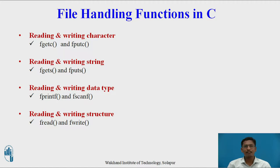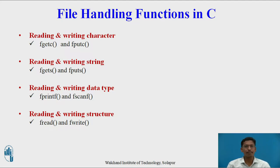These are the different file handling functions in C. For reading and writing a character we have two functions: fgetc and fputc. For reading and writing a string we have fgets and fputs — a string being an array of characters. For other data types we have fprintf and fscanf. For reading and writing user-defined data types like structures we have fread and fwrite. We will see all these functions in detail now.